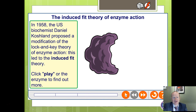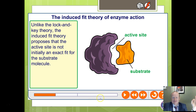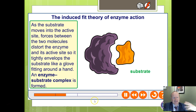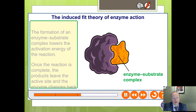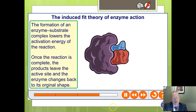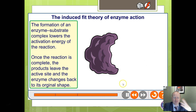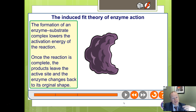In the animation for the induced-fit model, the substrate doesn't necessarily need to be an exact-exact fit — it needs to be a roughly close fit. As they move together, it distorts the enzyme slightly, tightening it up in a hand-in-glove sort of way. It still forms an enzyme-substrate complex, which lowers the activation energy and allows the reaction to occur. Once the substances separate, the enzyme reforms back to its original shape. Whether it's an exact fit or an induced fit, the fundamental principle is a fit between the active site and the substrate.